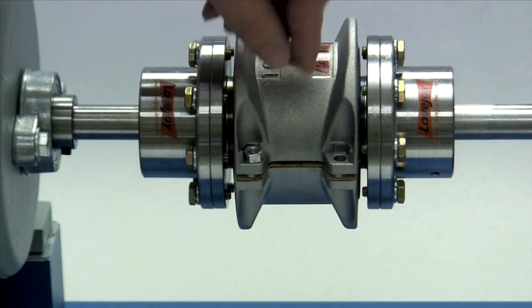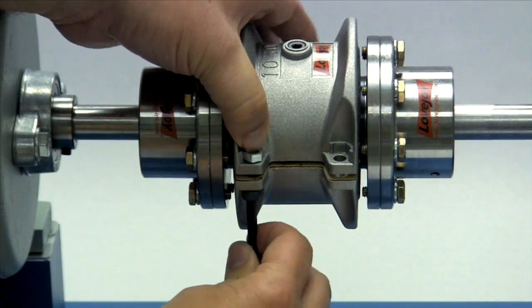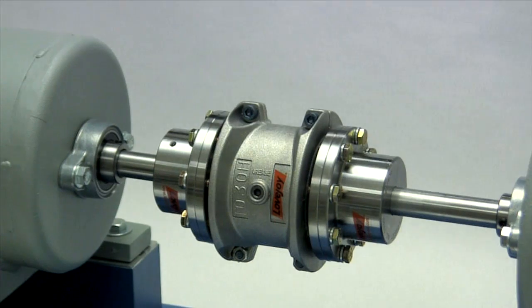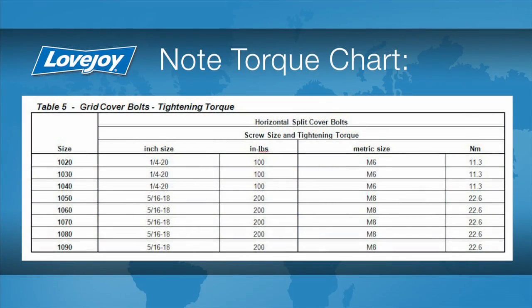Insert the fasteners with the nuts fitted into the recesses provided. Hand tighten each bolt until all are in place. Then with a torque wrench, tighten each fastener to the torque specified in the installation guide.